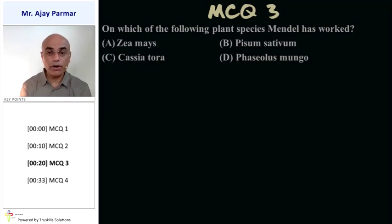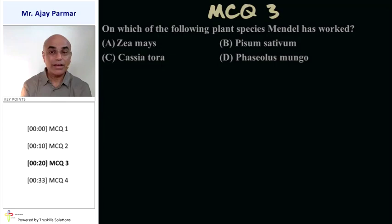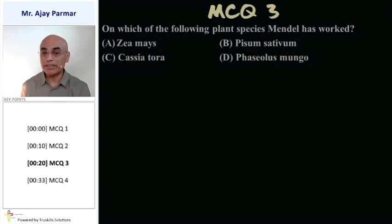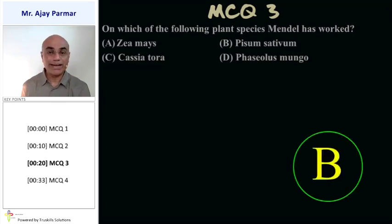On which of the following plants did Mendel work? That is the garden pea plant, scientifically known as Pisum sativum, and that is option B.